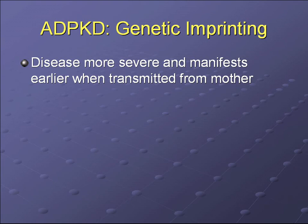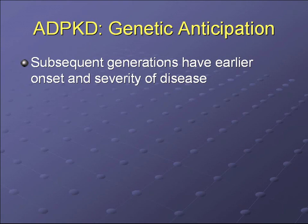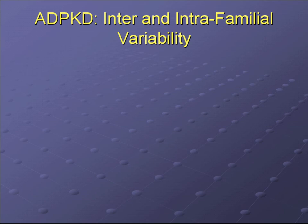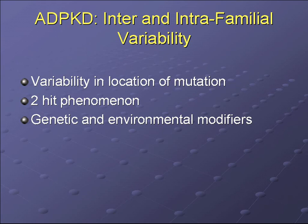Polycystic kidney disease exemplifies two genetic phenomena. One is genetic imprinting, where the disease may be more severe and manifest earlier when transmitted from the mother. The second is genetic anticipation, where subsequent generations have earlier onset and severity, though this is not always the case. There is great inter- and intra-familial variability thought to be due to variability in mutation location, the two-hit phenomenon where a normal gene becomes mutated during the patient's life, and genetic and environmental modifiers yet to be characterized. Some of this data comes from studies of monozygotic twins.